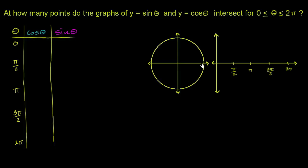Just to be clear: this is a unit circle with the x-axis and y-axis. Over here, we're going to graph these two functions. This is going to be the y-axis, and it's going to be a function of theta — not x — on the horizontal axis.